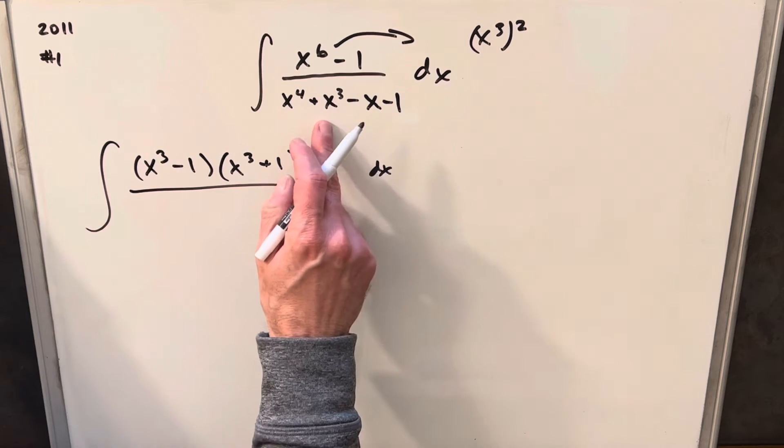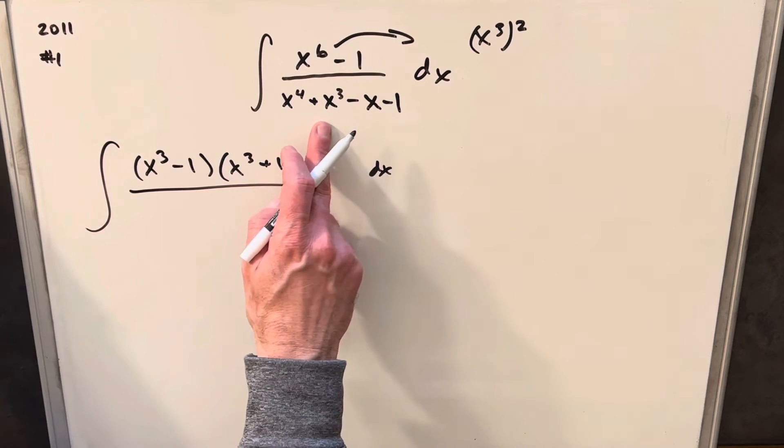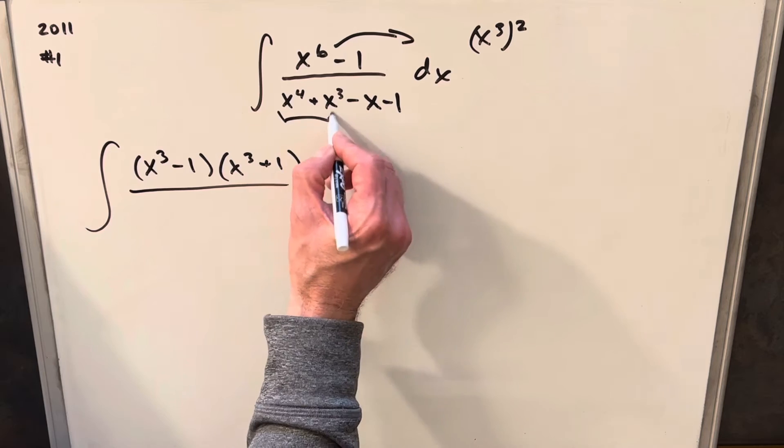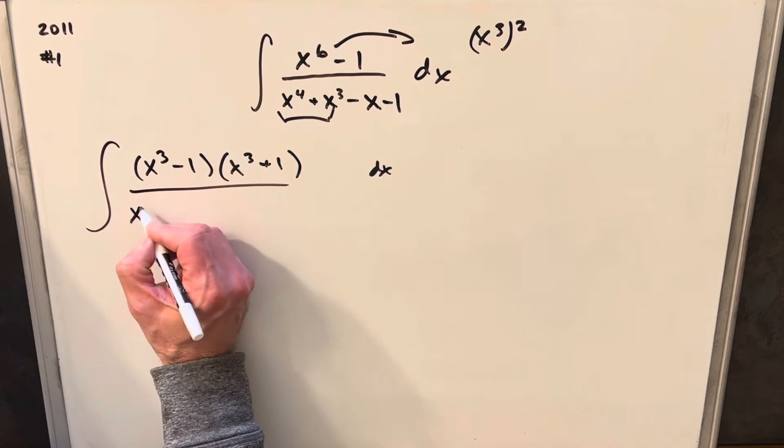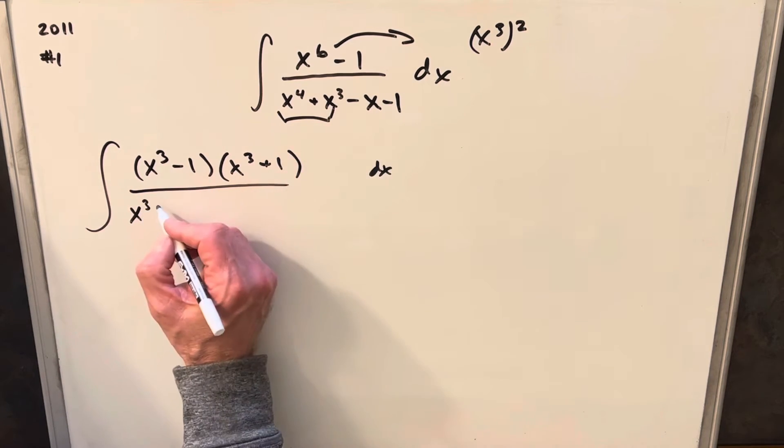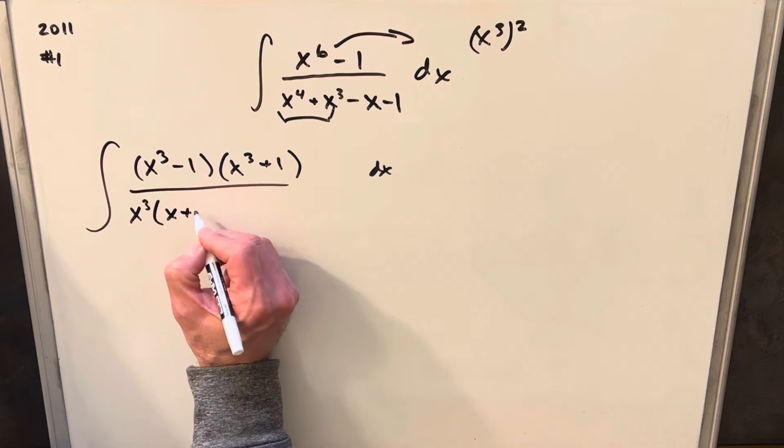And look at the denominator. I think this is factorable probably a few different ways, but what I want to do is factor from just these first two terms. Let's factor an x cubed out. So factoring an x cubed out of there, this is going to be x plus 1.